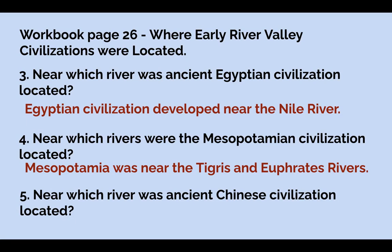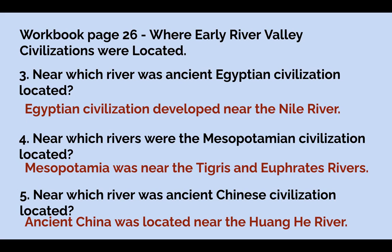Number five: near which river was ancient Chinese civilization located? Ancient China was located near the Huanghe river, also known as the Yellow River. Do you know why it's called the Yellow River? There is a pigment in the soil at the bottom of the river, and when the water reflects on the bottom, it looks kind of yellow — that's where the name came from.